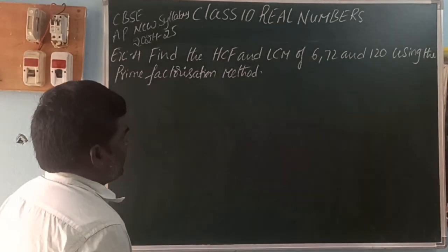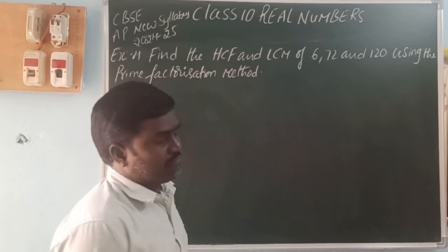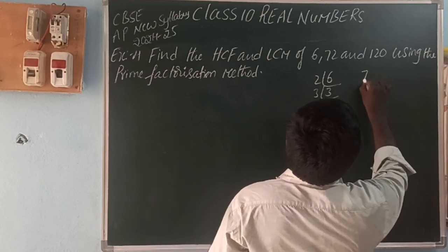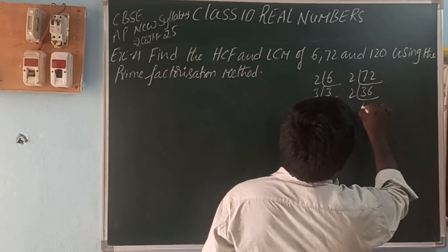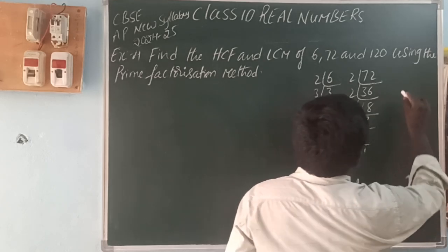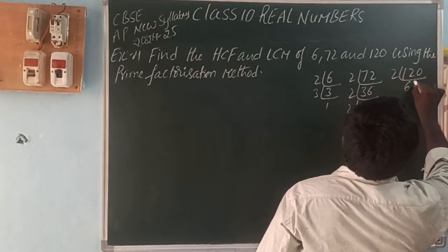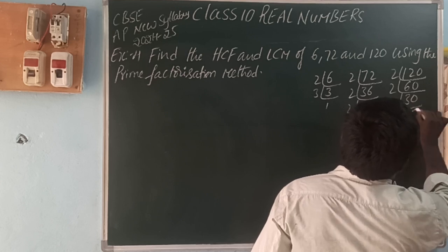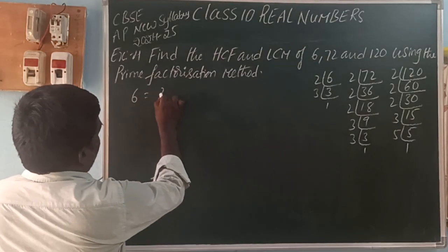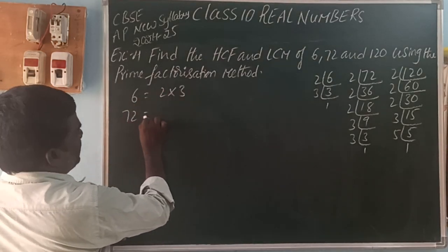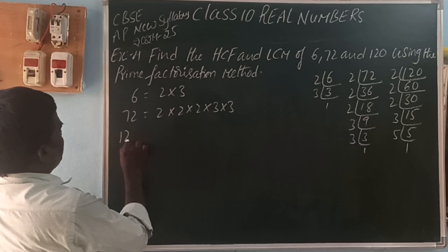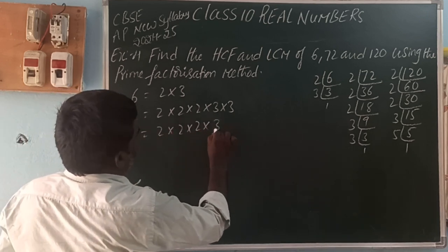Next, find the HCF and LCM of 6, 72, and 120 using the prime factorization method. For 6: 2 gives 3, then 3 gives 1. So 6 = 2 into 3. For 72: divide by 2 to get 36, 2 gives 18, 2 gives 9, 3 gives 3, 3 gives 1. So 72 = 2 into 2 into 2 into 3 into 3. For 120: 2 gives 60, 2 gives 30, 2 gives 15, 3 gives 5, 5 gives 1. So 120 = 2 into 2 into 2 into 3 into 5.